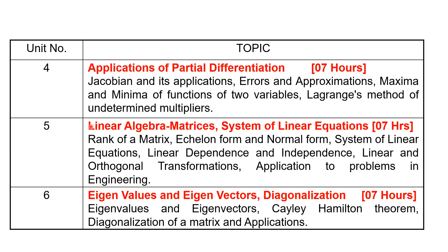Unit 5 is linear algebra, covering matrices and systems of linear equations, starting from rank of a matrix by converting to echelon form and normal form, solving systems of linear equations, linear dependence and independence of vectors, linear and orthogonal transformations, and applications to engineering problems. Unit 6 covers eigenvalues, eigenvectors, and diagonalization of matrices, including the Cayley-Hamilton theorem and methods of diagonalizing a matrix.